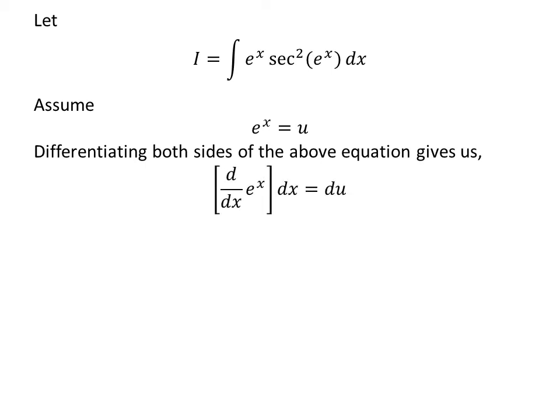Taking the differential of both sides gives us the derivative of e^x with respect to x times dx equals du. We know the derivative of e^x is e^x as per the definition of the exponential function. So, e^x dx equals du.